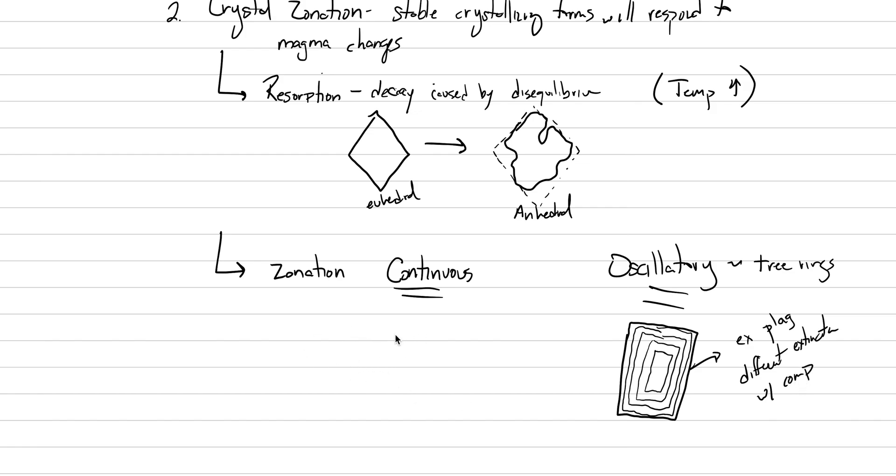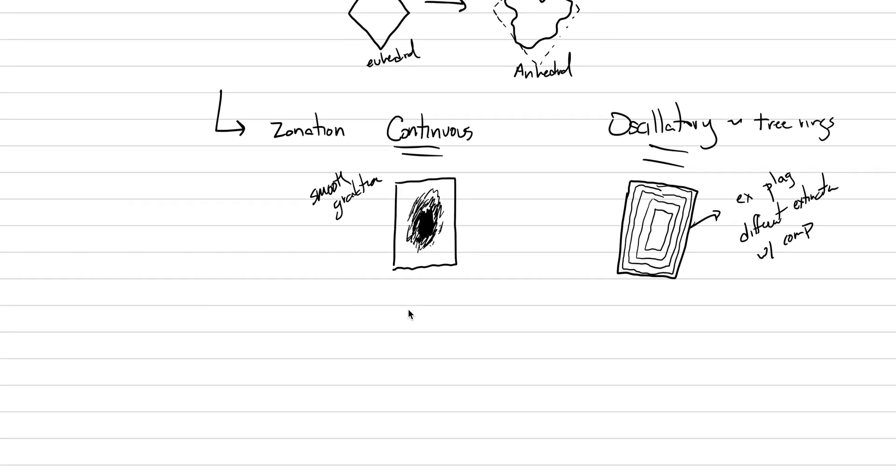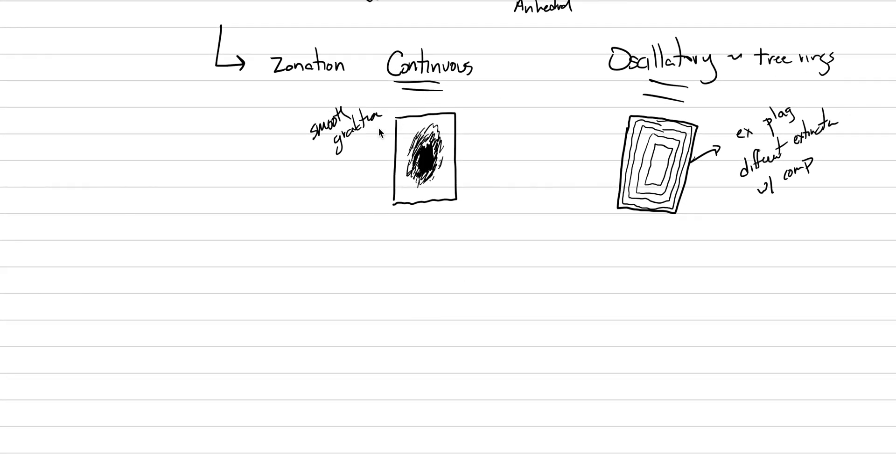You can also see plagioclase with continuous zonation, and here the events are not punctuated in an oscillatory form. And instead what we get is the core might go extinct, and then as you go away from the core, it gets less and less pronounced, the amount of extinction, and it's just really a smooth gradient. Here what we have is kind of a smooth gradation. And both of these show changes in the magma chamber. Now in this example it was plagioclase for both of them, but it doesn't have to be. Many different minerals show zonations.